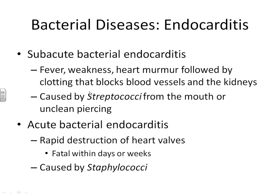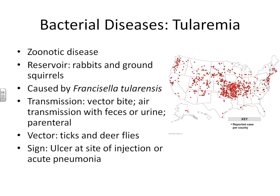Our second bacterial disease is called tularemia. Tularemia is a zoonotic disease typically found in nature in rabbits and ground squirrels. This disease has an etiology called Francisella tularensis — that is the actual name of the bacteria. The way you get the bacteria from the rabbit is to get bitten by a tick or a deer fly that has bitten the rabbit or the ground squirrel and then bites you. You can also have transmission from contact with rabbit or squirrel feces or urine, but that is much less common.